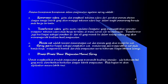Selanjutnya pompa cat adalah tempat penampungan cat dan pompa yang akan mengirim cat. Spray gun berfungsi sebagai pengkabut cat, mendorong dan mengarahkan cat pada benda kerja, mengontrol bentuk dan pola pengecatan, serta beberapa fungsi khusus lainnya.